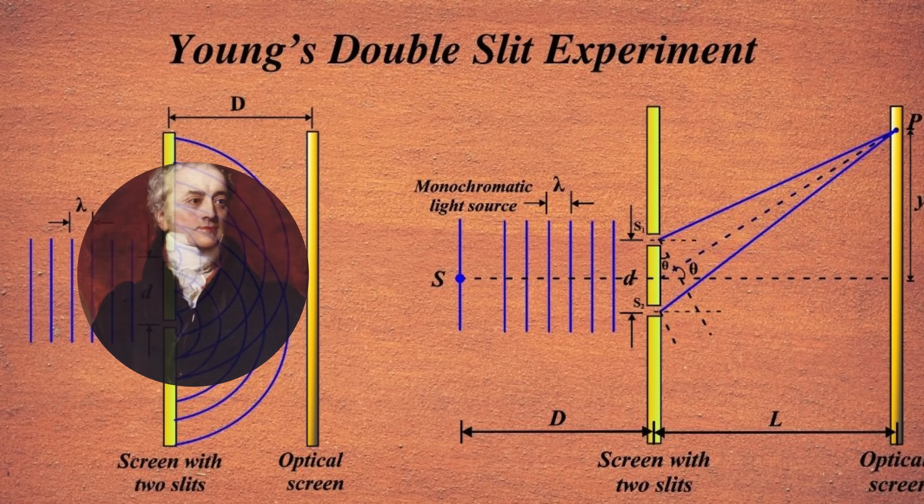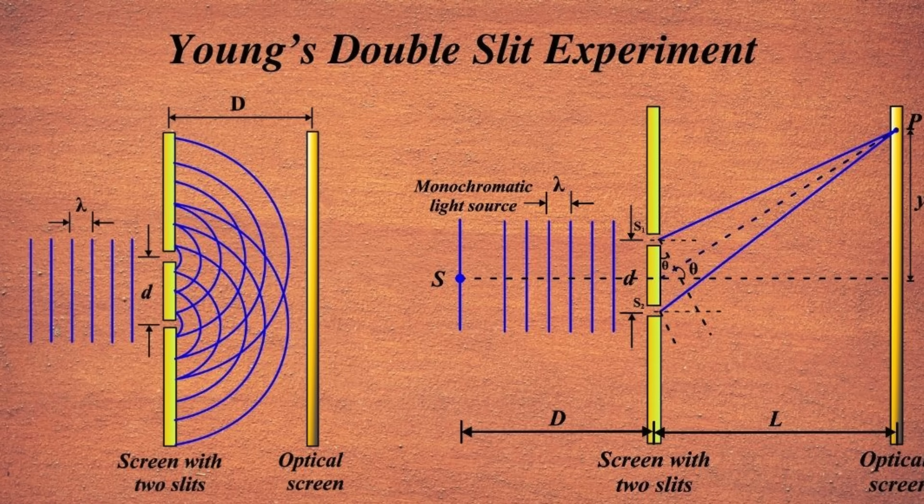Thomas Young, an English scientist, designed an experiment to settle the debate about the nature of light. He set up a barrier with two narrow slits and a screen behind it. Then, he shined light through the slits, expecting to determine whether light behaved as particles or waves.